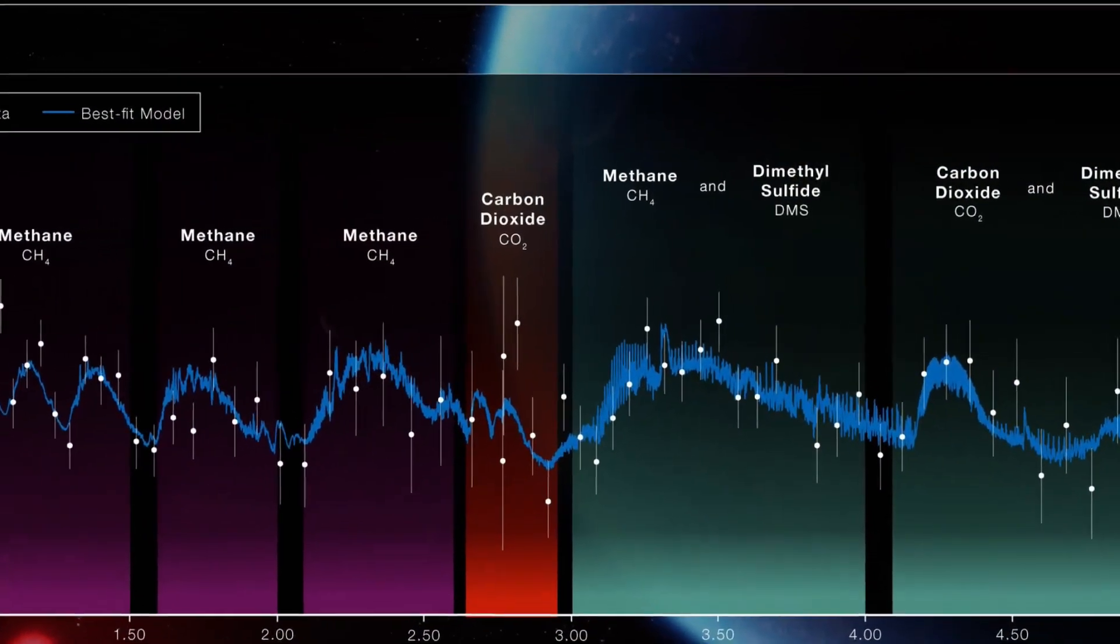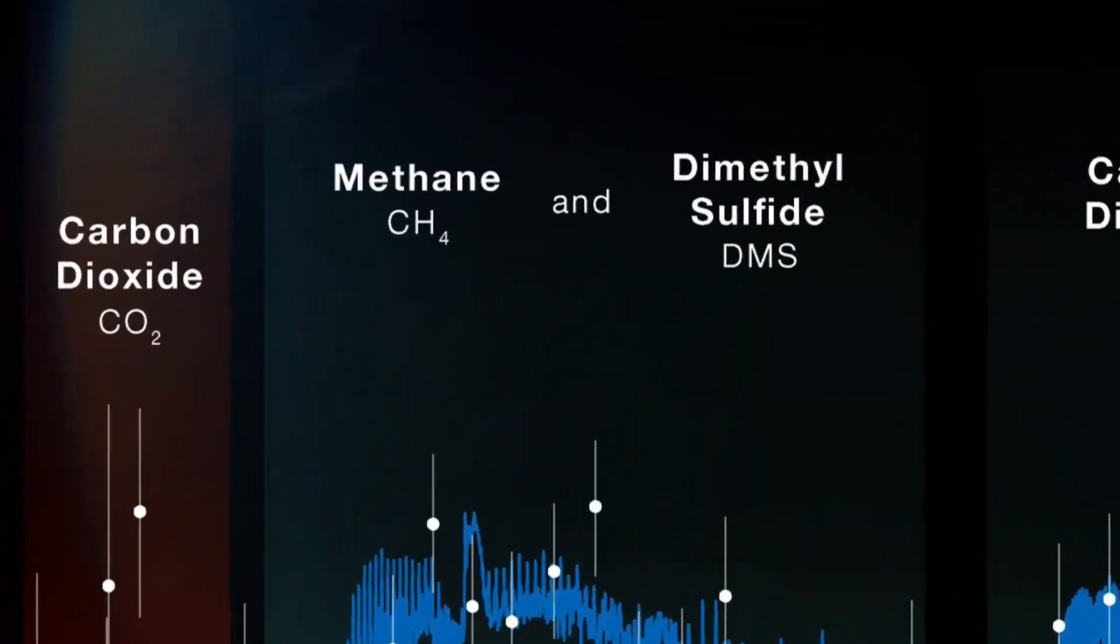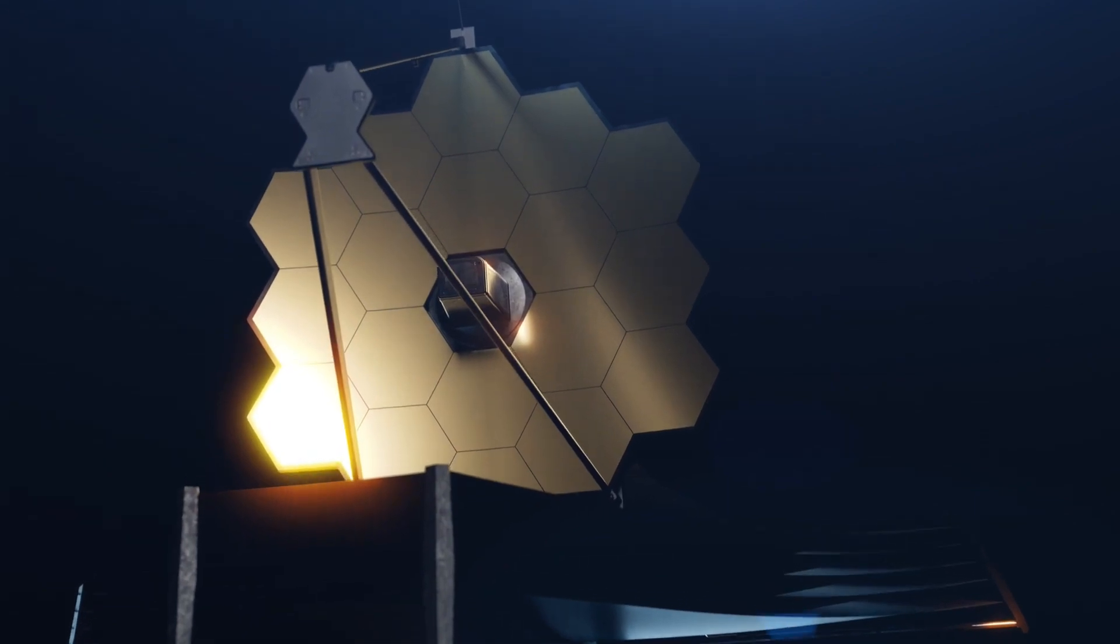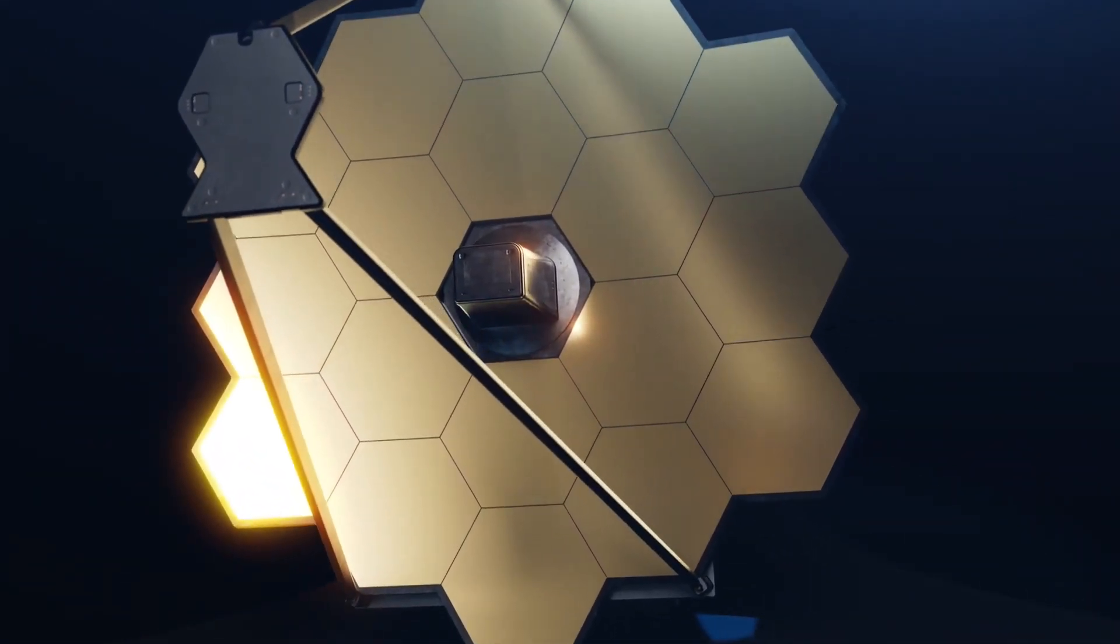Madhu Sedan and the team found the presence of methane and carbon dioxide while hinting at an absence of ammonia. The infrared spectrum of James Webb also unveils hints of dimethyl sulfide, but sadly, they didn't sneak closely into its presence.